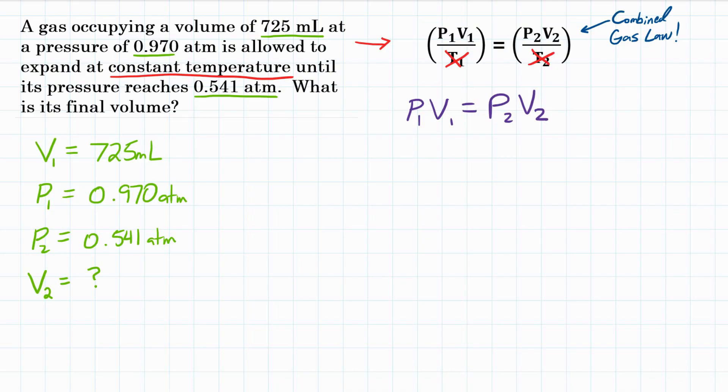So since we have our equation and we have our variables except for 1, we can plug those into our equation. So P1 is 0.970 atmospheres, and that's going to be multiplied by V1, which is 725 milliliters. That equals P2 0.541 atmospheres times V2, which we don't know. So, question mark or x, however you want to write that.